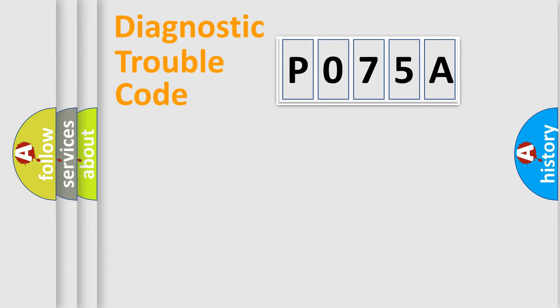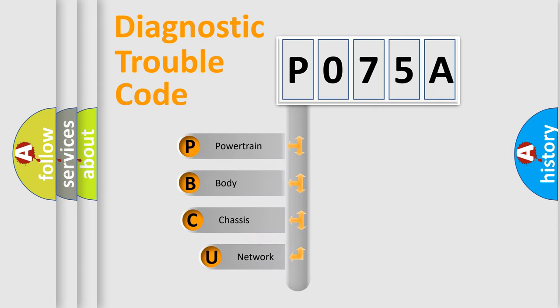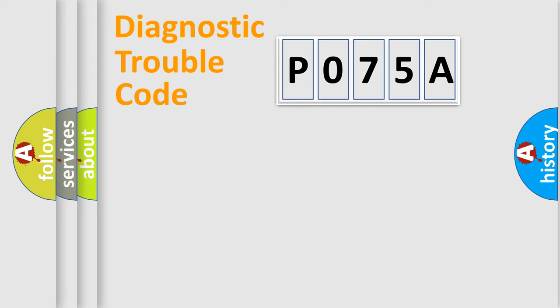Let's do this. First, let's look at the history of diagnostic fault code composition according to the OBD2 protocol, which is unified for all automakers since 2000. We divide the electric system of an automobile into four basic units: Powertrain, Body, Chassis, and Network.